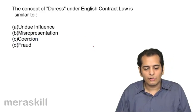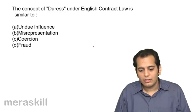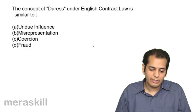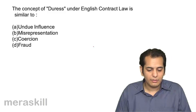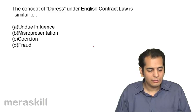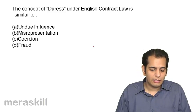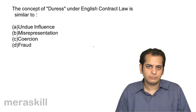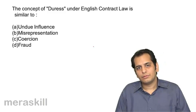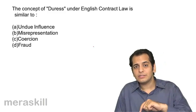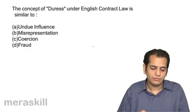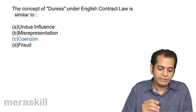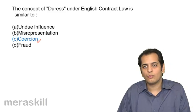Next question: the concept of duress under English contract law is similar to A undue influence, B misrepresentation, C coercion, D fraud. Duress in England is coercion in India. The answer is coercion.